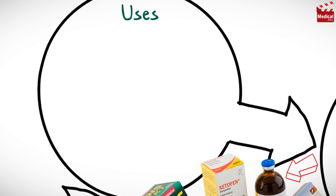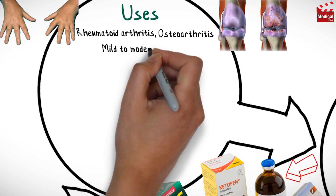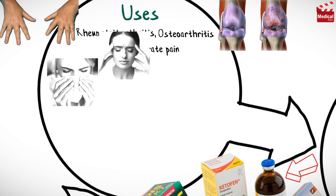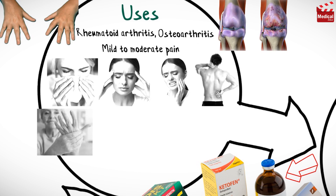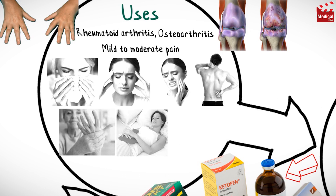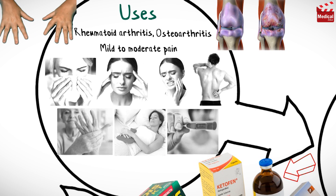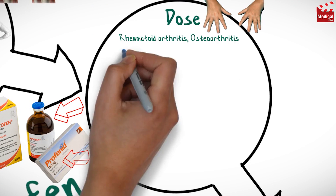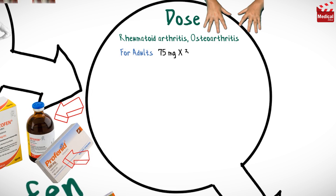Ketoprofen is used in the treatment of rheumatoid arthritis, osteoarthritis, and mild to moderate pain, such as temporary relief of minor aches and pains associated with common cold, headache, toothache, muscular aches and backache, minor arthritis pain, menstrual cramps, and reduction of fever.